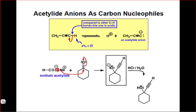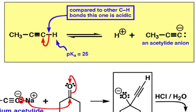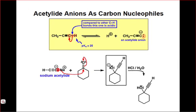Acetylide anions are also great carbon nucleophiles, and can form propargylic alcohols upon addition to carbonyl groups. You'll recall from our discussion of hybridization that the C-H bond of a terminal acetylene, such as the one shown here, is considerably more acidic than C-H bonds built from sp2 or sp3 orbitals. The reason for this is because the lone pair of the conjugate base is in a relatively stable sp orbital. Although these are relatively stable anions relative to those of sp2 and sp3 hybridized carbons, they're still quite reactive and can add into carbonyl groups in an addition-type process to generate alcohols such as the one shown here.